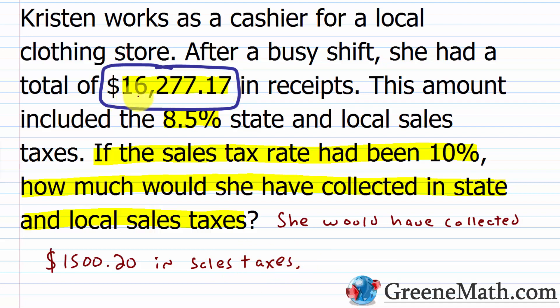To check: if she had $16,277.17 in total receipts including 8.5% state and local sales taxes, starting with $15,002 in pre-tax goods sold and multiplying by 1.085 gives 16,277.17 — that checks out. Then, if the sales tax rate had been 10%, moving the decimal point one place to the left on $15,002 gives $1,500.20 in sales taxes. Our answer is correct — she would have collected $1,500.20 in sales taxes.